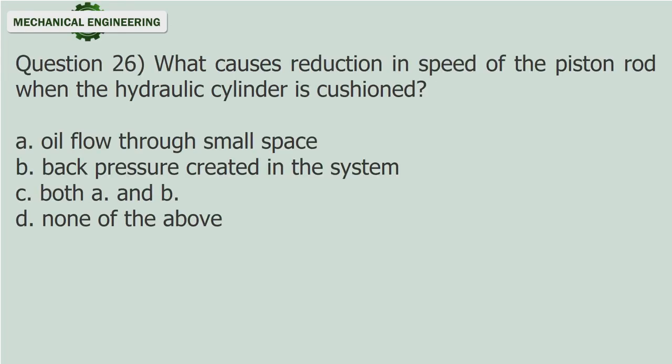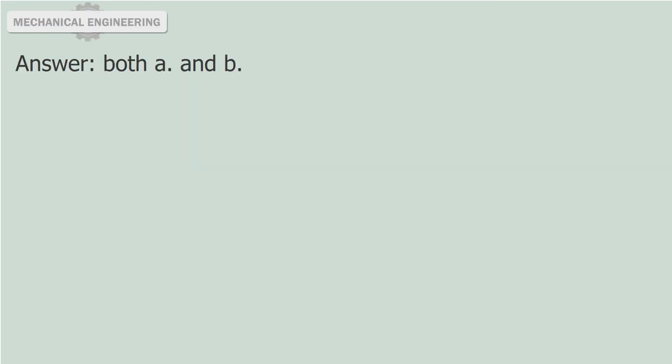Question 26: What causes reduction in speed of the piston rod when the hydraulic cylinder is cushioned? A. Oil flow through small space. B. Back pressure created in the system. C. Both A and B. D. None of the above. Answer: Both A and B.